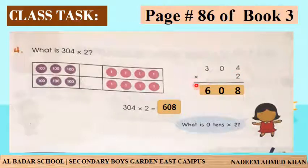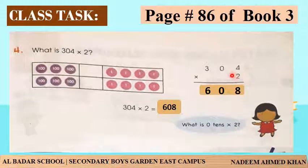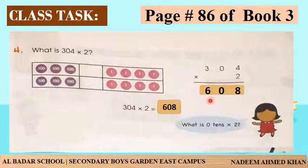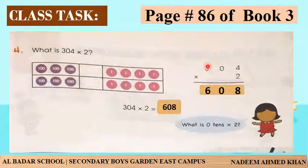تو پیارے بچوں، 2 کا table تو آپ کو بہت اچھی طرح آتا ہوگا۔ 2 multiplied by 4 is equal to 8، 2 multiplied by 0 is equal to 0، 0 لکھ دیجئے۔ پھر 2 multiplied by 3 is equal to 6، 6 لکھ دیجئے۔ اب آپ دیکھیں کہ یہ ones place ہے، یہ tens place ہے، اور یہ hundreds place ہے۔